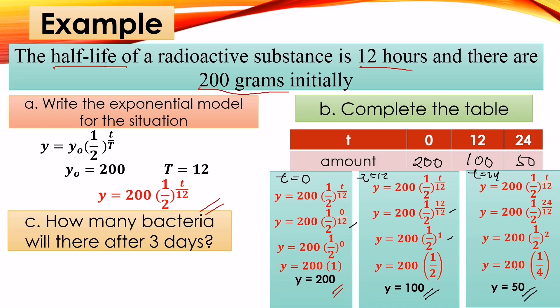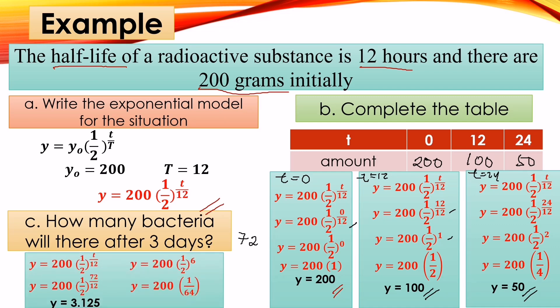For part C, how many grams remain after 3 days? Three days is equivalent to 72 hours. Substitute t = 72: y = 200 · (1/2)^(72/12) = 200 · (1/2)⁶. Computing: 1⁶ = 1 and 2⁶ = 64, so (1/2)⁶ = 1/64. Then y = 200 × 1/64 = 200/64 = 3.125 grams remaining after 3 days.